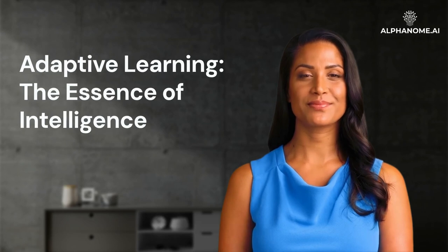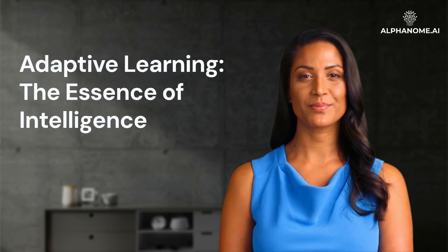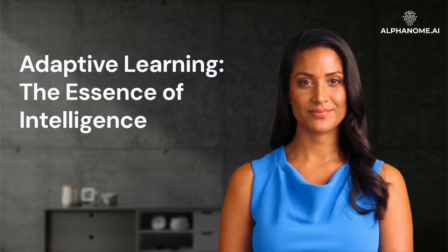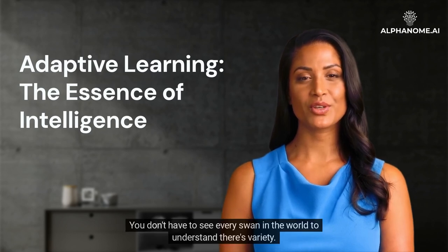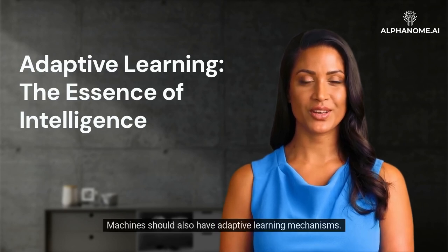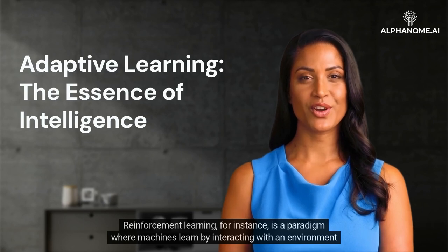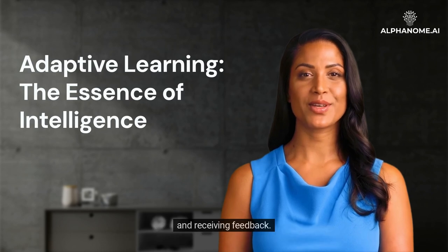Adaptive Learning: The Essence of Intelligence. Humans learn adaptively — we adjust our beliefs and knowledge based on new experiences, often discarding irrelevant information. If you've always believed swans are white, seeing a black swan will alter your belief; you don't have to see every swan in the world to understand there's variety. Machines should also have adaptive learning mechanisms. Reinforcement learning, for instance, is a paradigm where machines learn by interacting with an environment and receiving feedback.